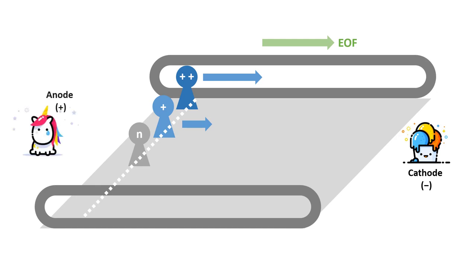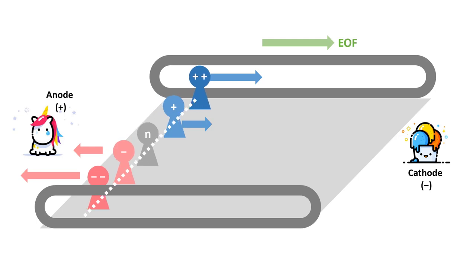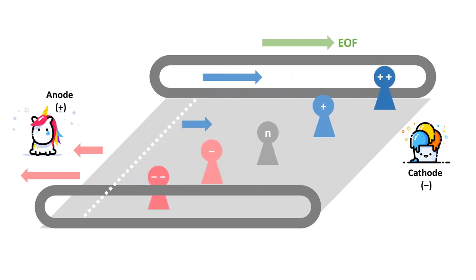On the other hand, imagine we have a unicorn soft toy representing the positively charged anode at the other end of the travelator. When kid number four, the mono-anion, sees the unicorn, she screams and runs towards it. While her bigger sister, kid number five the di-anion, runs faster towards the unicorn than her. But neither of them are faster than the travelator, so overall they will all move towards the ice cream at different rates.